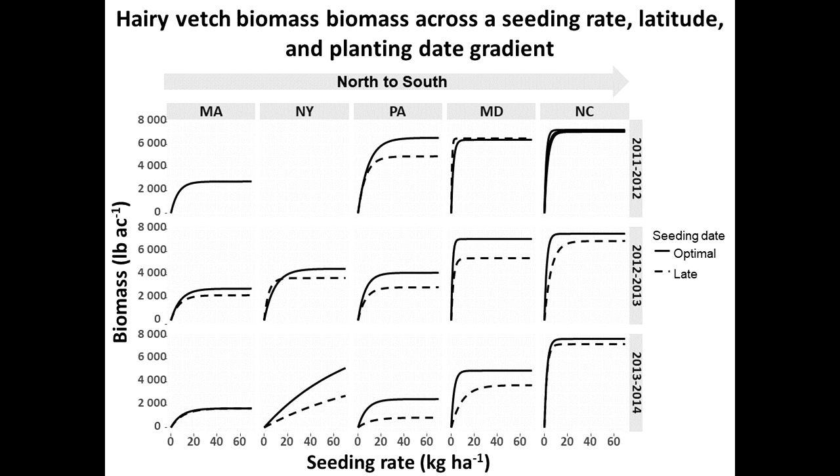As you can see in this figure, that high seeding rate is not necessary in southern climates. In North Carolina, and even down to Maryland, five to ten pounds per acre of hairy vetch seed is enough to reach maximum biomass. Another key point: the maximum biomass achievable in North Carolina and Maryland is much higher than in New York and Massachusetts, which don't come close. Their biomass potential is simply lower.